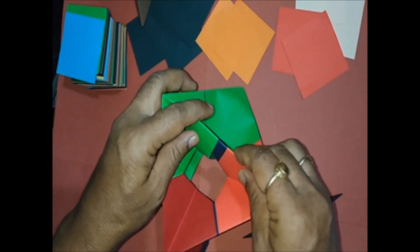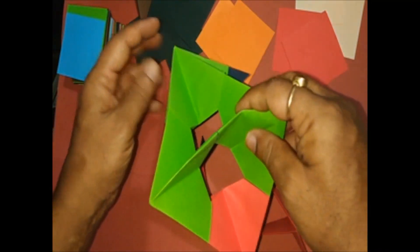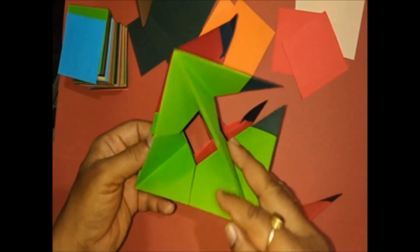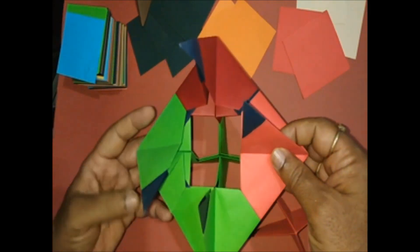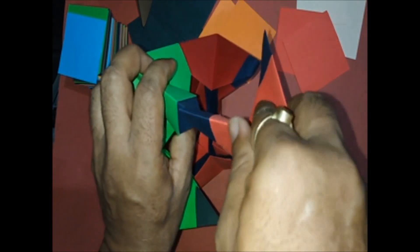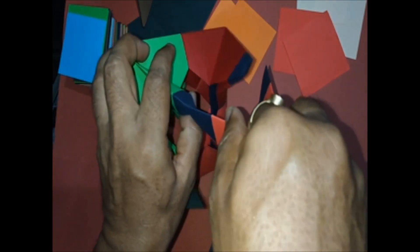Now we are left with the last four flaps to be assembled to the sixth unit. This octahedron has got many geometrical shapes.